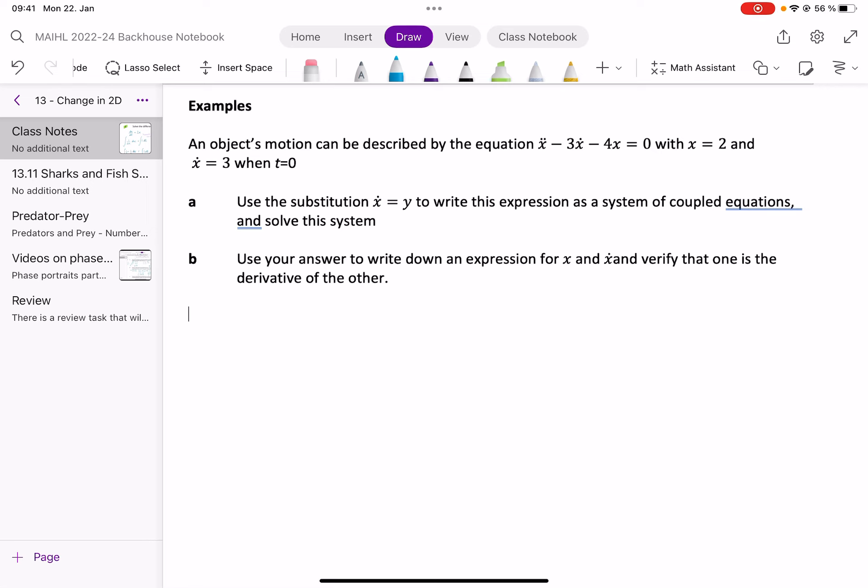So we can see that this one is an example where we're talking about motion. So x will be our displacement, x dot is velocity, and x double dot is acceleration.